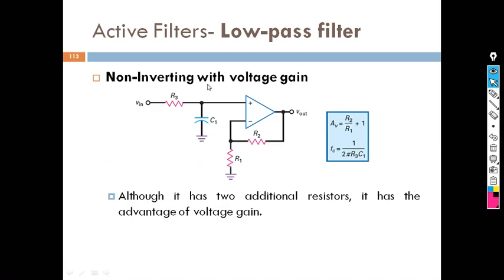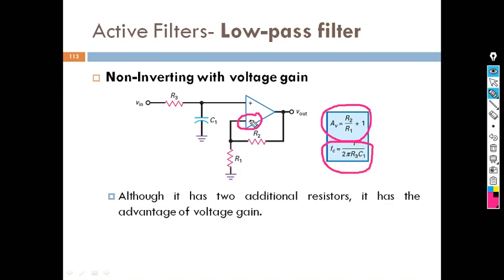The next one is the non-inverting active filter with voltage gain — it is also a low pass filter. What is the difference from the last one? Here, we have connected feedback resistors in a voltage divider configuration, and whatever input we get, we will get gain for that. Remember, feedback is always connected to the inverting input only. The gain formula is given here, and the cutoff frequency is designed by 1/(2πR3C1). This is also a low pass filter.